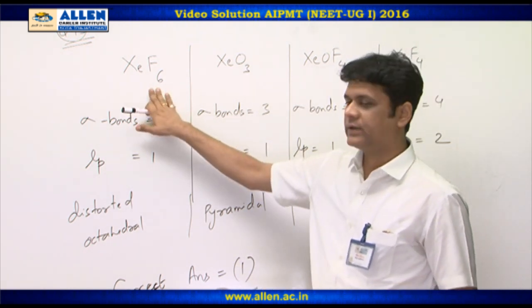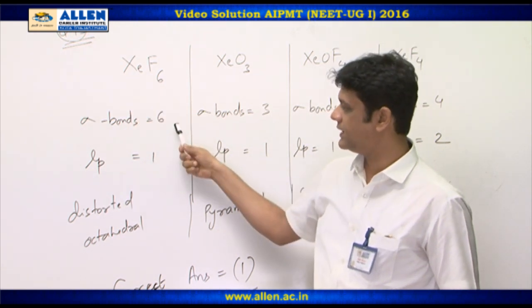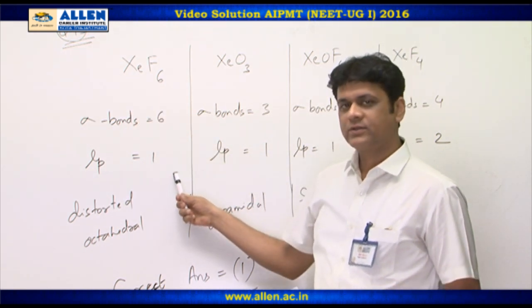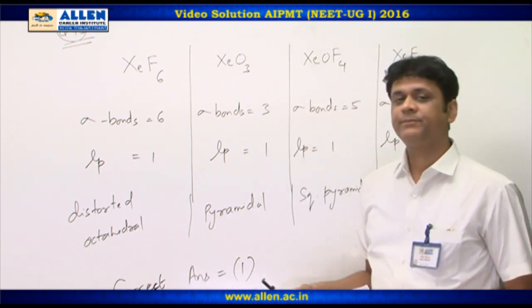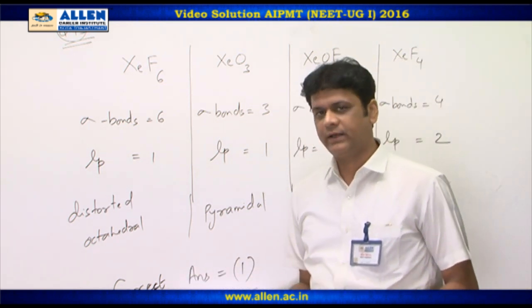In the first, xenon hexafluoride, sigma bonds are 6 and number of lone pairs are 1. So, according to VSEPR theory, the shape should be distorted octahedral or capped octahedral.